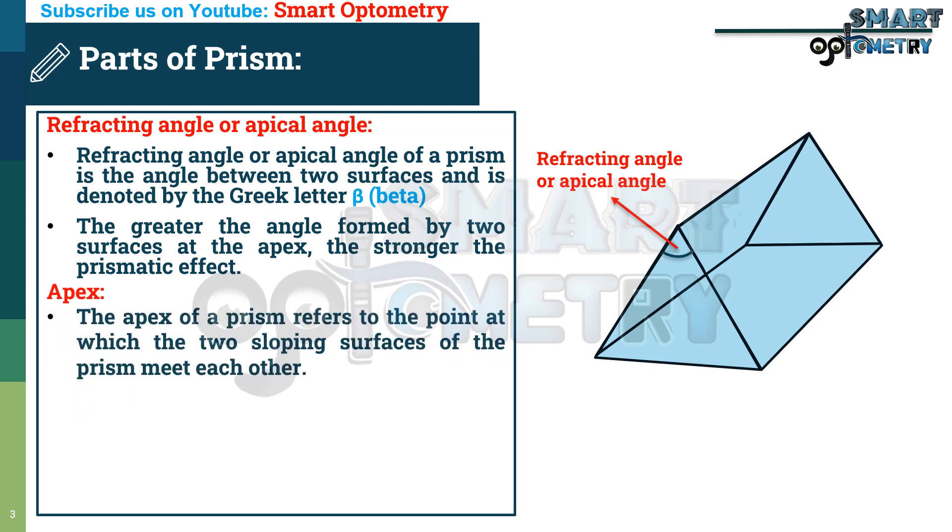Apex. The apex of a prism refers to the point at which the two sloping surfaces of the prism meet each other. In other words, it is the highest point of the triangular sides of the prism. Here in this figure, this is the apex of this prism.